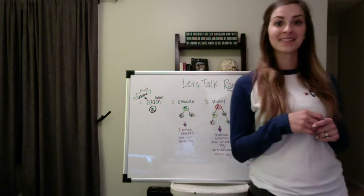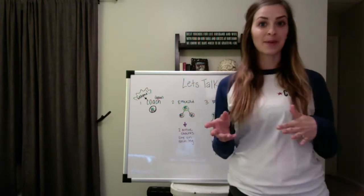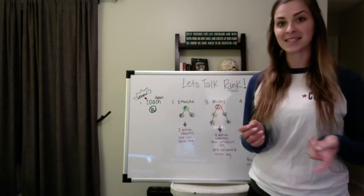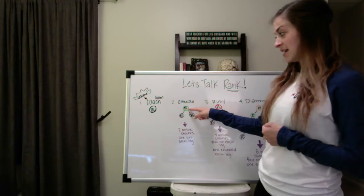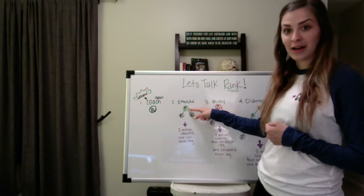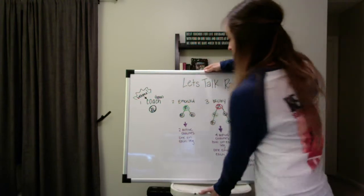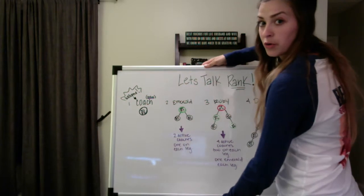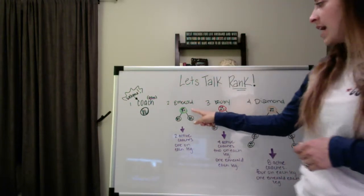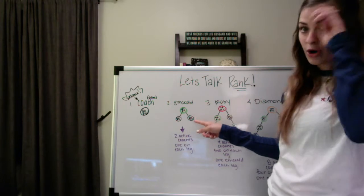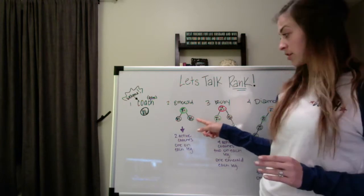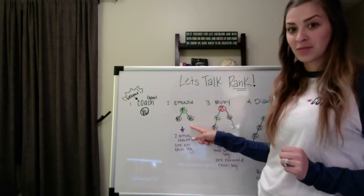And then the next step after that, when you start adding people to your team and growing your organization is an Emerald coach. An Emerald coach means that you are here with your 50 personal volume from your own order every month. And then you have two coaches underneath you that are also active with their orders, one on each business leg.